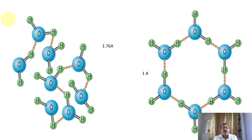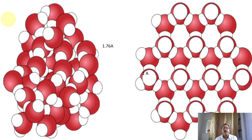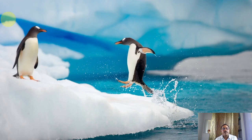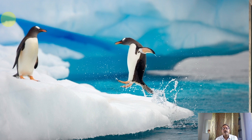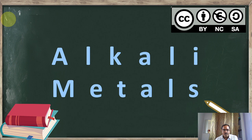I think we discussed this last class; I am just revising it. The right image belongs to solid form of water, the left image belongs to liquid form of water. It is in a three-dimensional structure, and because of this the fishes can live — ice forms the top layer, below which water is present. Now let us go to today's class, which is on alkali metals.